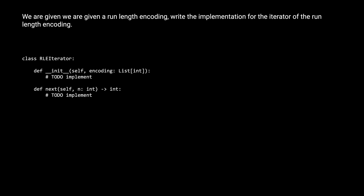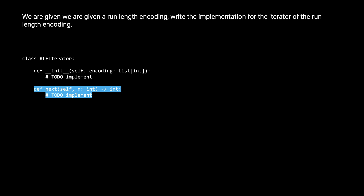Now that we know what a run length encoding is, let's get back to the problem of implementing an iterator. Here's the skeleton of what you would be given for the problem. The first part of the code is the constructor, where you are passed the encoding. The second part is the next method, used to iterate through the sequence. It takes in one parameter n, which represents how many elements to iterate through before returning a value from the sequence.